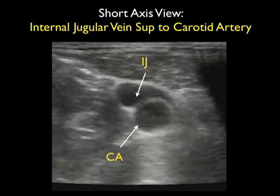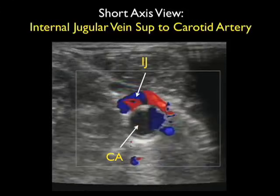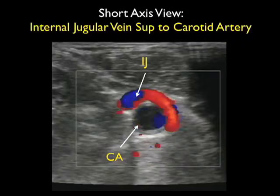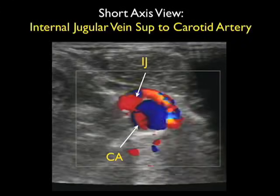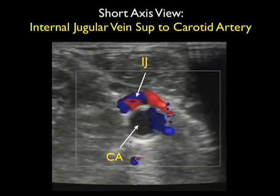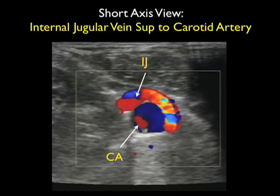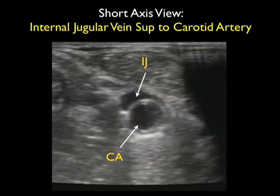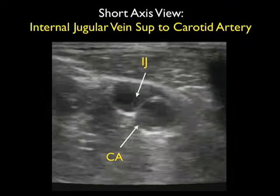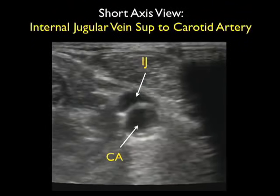Notice here we'll place Doppler flow to confirm the carotid artery, shown here deeper to the more superficial internal jugular vein. In this patient it would be extremely difficult to cannulate the internal jugular vein without puncturing the carotid artery. Best to attempt cannulation in another area of the body.